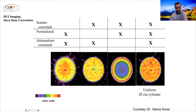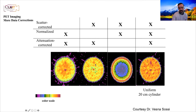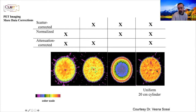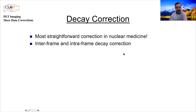Here's an example. If you do not do attenuation correction you get the usual dip we keep seeing. If you perform attenuation correction but not scatter correction you see a hump — you've corrected for attenuation but scatter causes overestimation. Once you correct for scatter but not normalization you may get a non-uniform image. Once you correct for all of them you get a more and more uniform image.